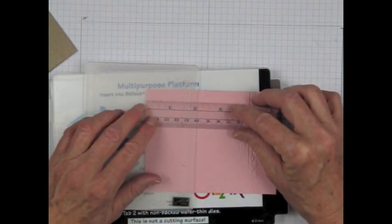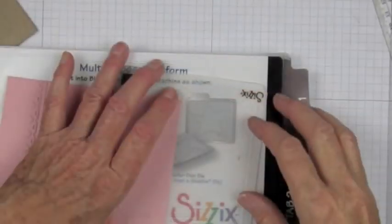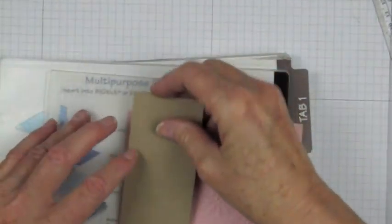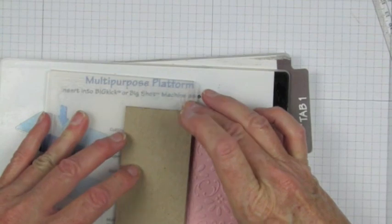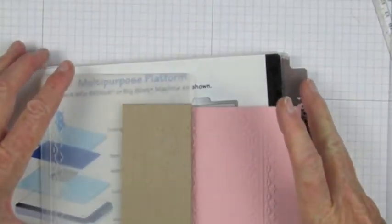And I can see already I'm going to need to make an adjustment. When I'm sure it's on there straight, I'll put the cardboard shim back in place just covering the edge of the embossing folder like so. And I'm going to run that through the Big Shot.